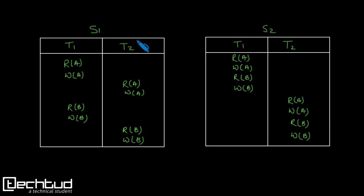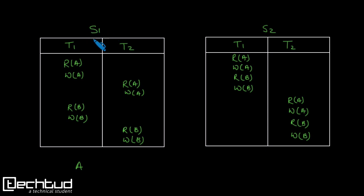Now we have two schedules, each with two transactions. Let's check for view equivalence. The first condition is to check whether for each variable the transaction performing the first read is the same in both schedules. For variable a, we can see that transaction t1 is performing the first read in schedule s1, and in s2 also transaction t1 is performing the first read.